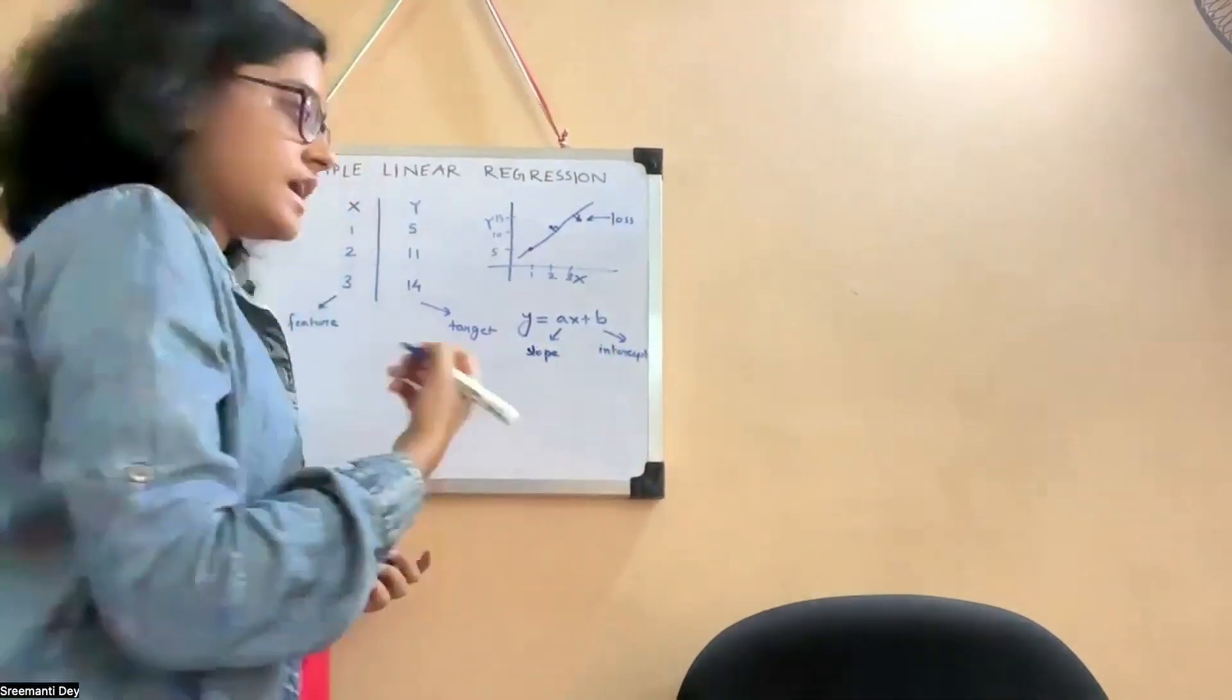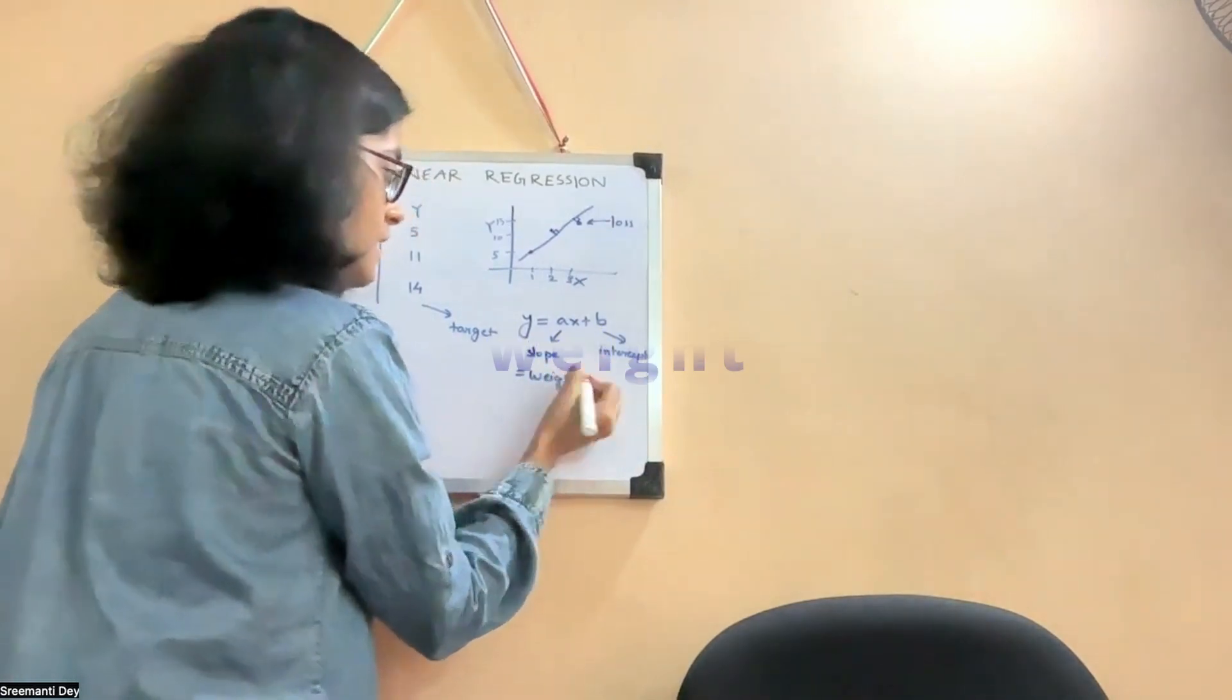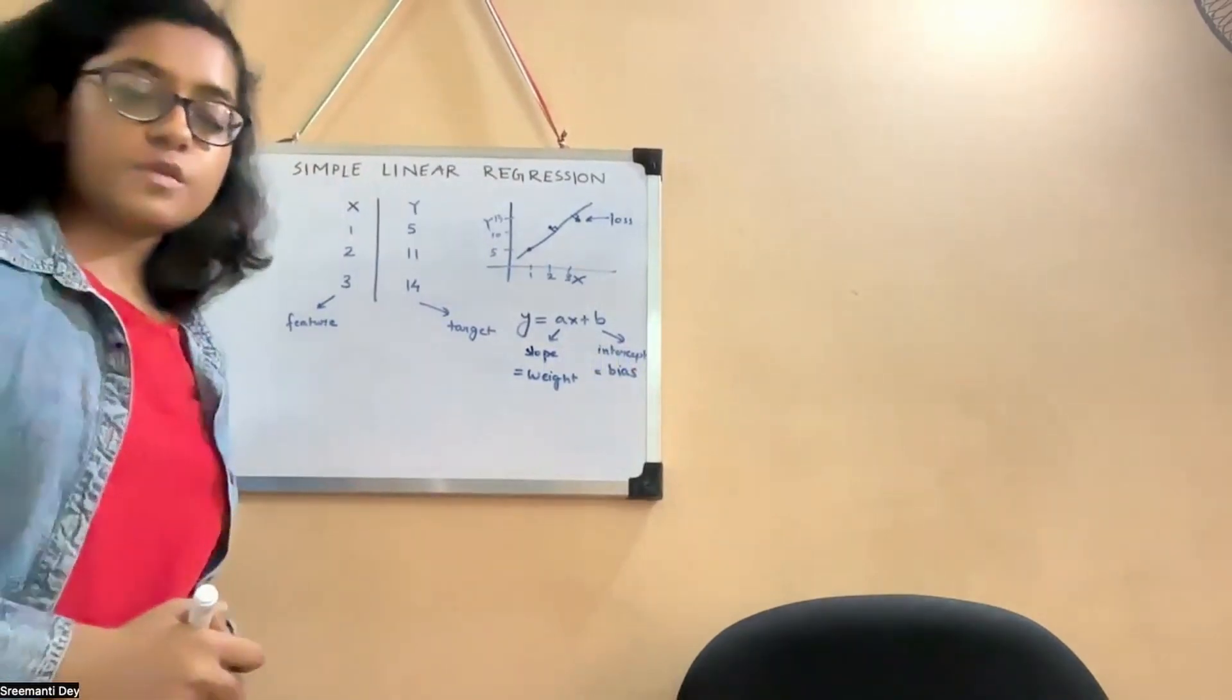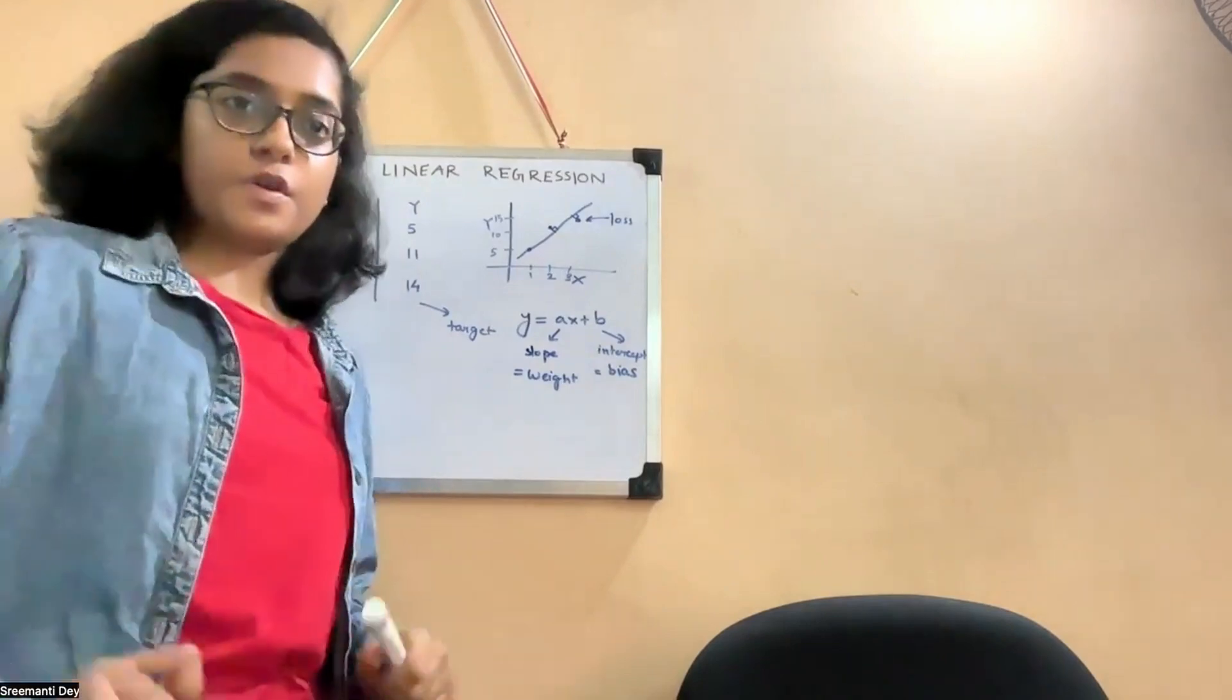This line is also called the best fit line. Now this a, as we have learned in our geometry lessons, is basically the slope and b is the intercept. In ML terms, a is going to be the weight and b is going to be the bias. And this is the equation of the line that we are looking for.